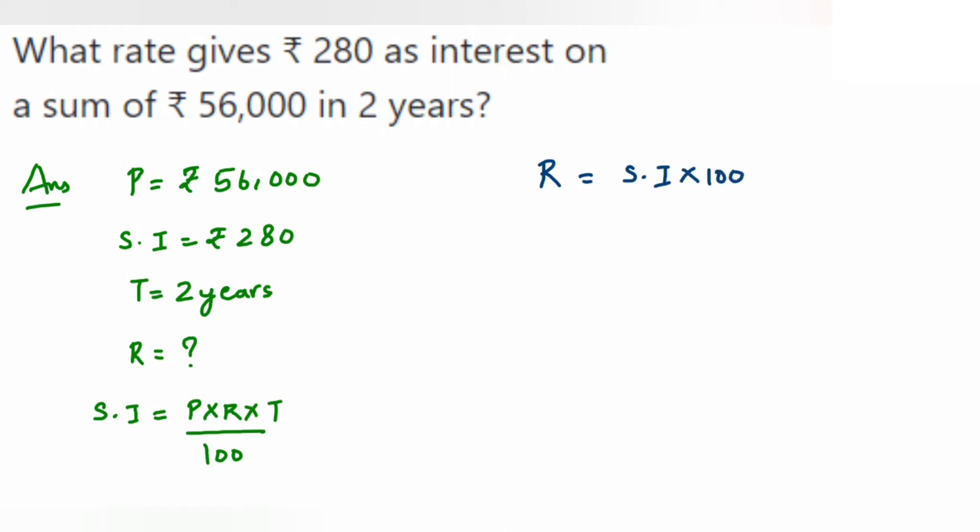Anyway, you will get the same answer if you use any formula. So here simple interest we have is rupees 280, so 280 multiplied by 100 upon principal is 56,000 and time is two years.